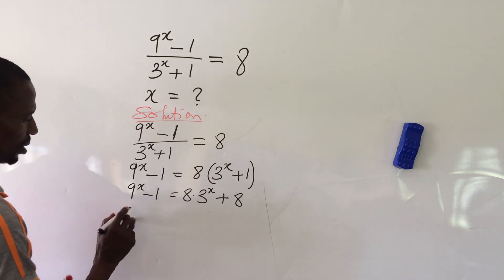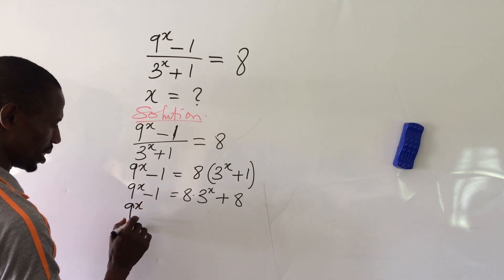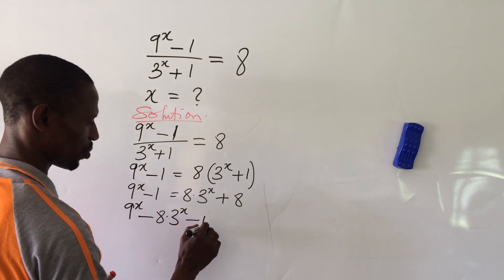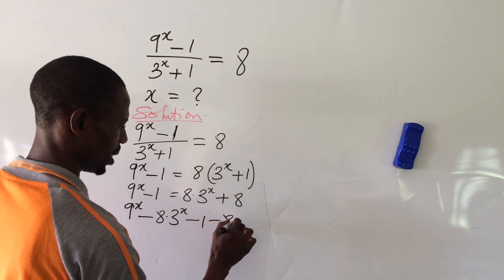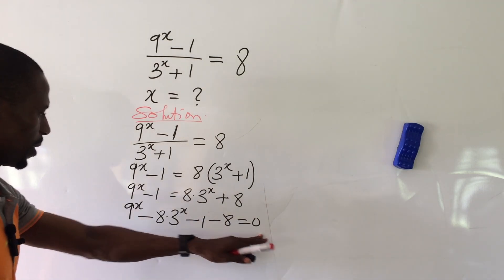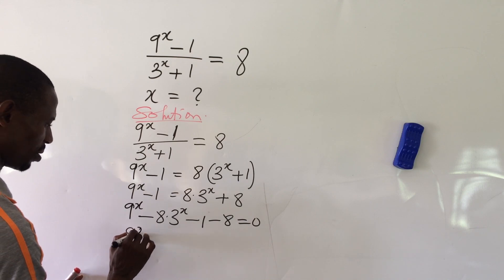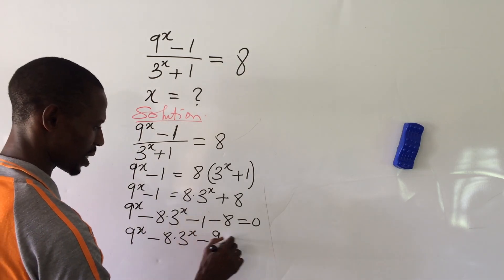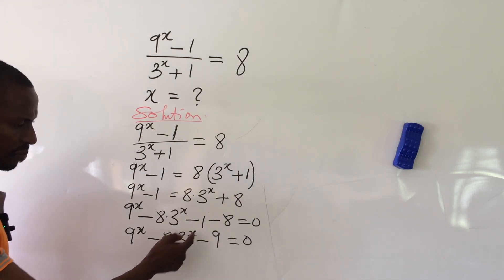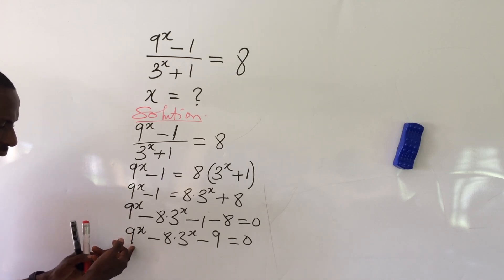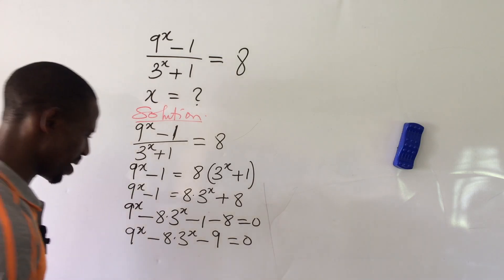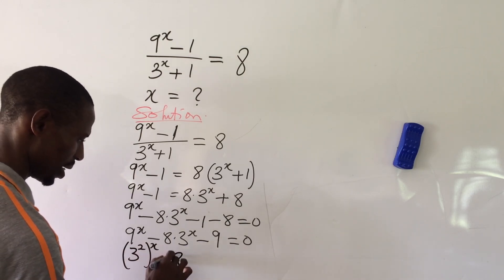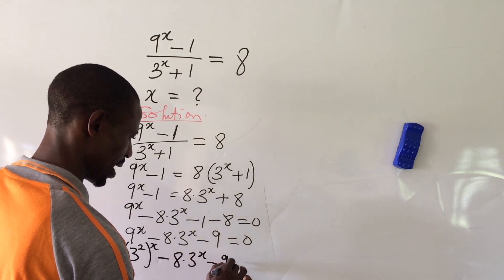Taking terms to the left-hand side: 9^x minus 8 · 3^x, then minus 1 minus 8 gives us minus 9, equal to zero. Now we can write 9 as 3 to the power of 2, so the equation becomes (3²)^x minus 8 · 3^x minus 9 equal to zero.